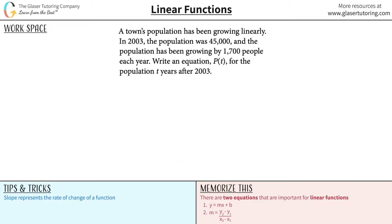A town's population has been growing linearly. In 2003 the population was 45,000 and the population has been growing by 1,700 people each year. Write an equation P(t) for the population t years after 2003.